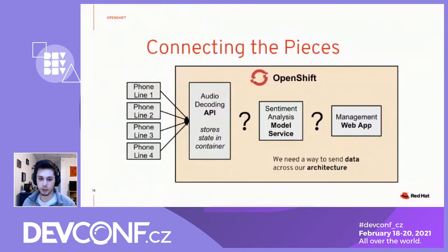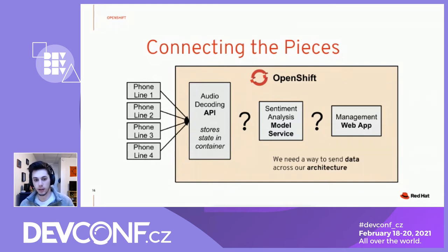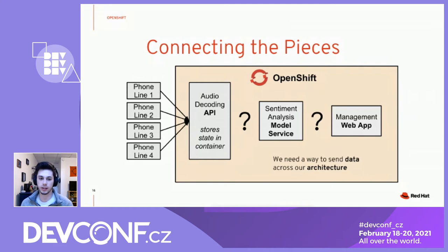To do this, we're going to use OpenShift to deploy three services: two model services and a web application. The first model service is this audio decoding API — it's going to decode audio coming in from the phone lines. The phone lines are going to call this API, post some audio chunks to it live, and it's going to store the state of this audio in the container. The reason it needs to store state is because live audio decoding is going to need past state to actually decode properly — if you don't have past state, it's just looking at small audio chunks. The sentiment analysis model is going to take these decoded texts and group them based on whether they're good or bad, or if they have some common issues, extracting nouns, verbs, or whatever.